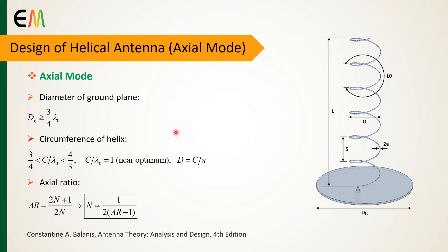In this section, the design procedure for the axial mode is presented. As with the normal mode, the ground plane diameter should be greater than three quarters of the wavelength. To achieve circular polarization primarily in the major lobe, the circumference of the helix must be in this range. Also, the axial ratio for the condition of increased directivity is computed based on the number of helix turns by this equation, so we can obtain the number of turns according to the considered axial ratio value.